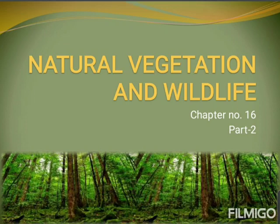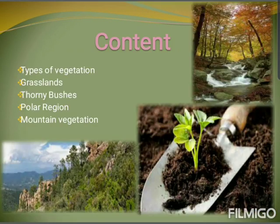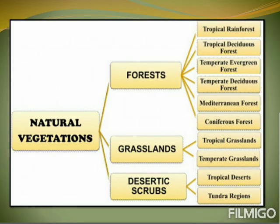Hello everyone, this is the second part of the chapter Natural Vegetation and Wildlife. Let's recall what we have learned in the previous video. Natural vegetations were divided into three groups: Forest, Grasslands, and Desertic Scrubs. We have already learned about the forests, which were classified into Tropical Rainforest, Tropical Deciduous Forest, Temperate Evergreen Forest, Temperate Deciduous Forest, Mediterranean Forest, and Coniferous Forest. Now we will learn about the rest of the classifications.